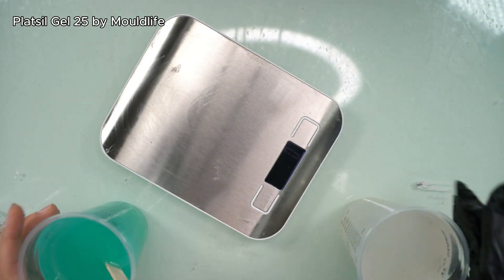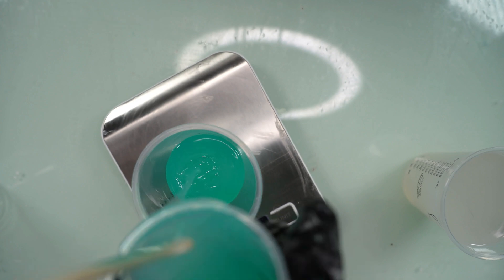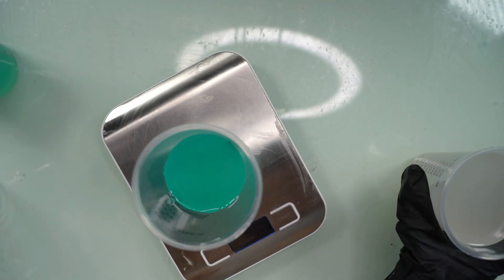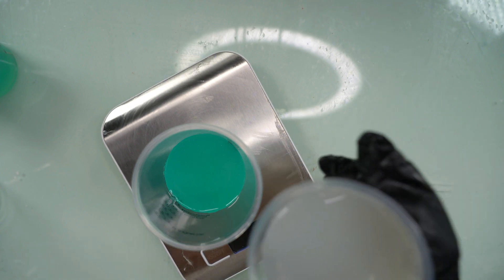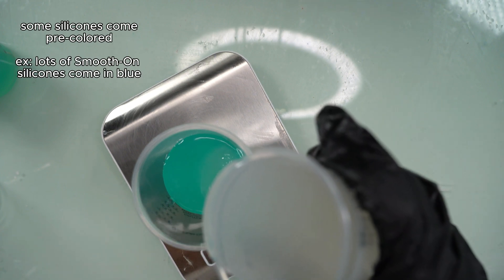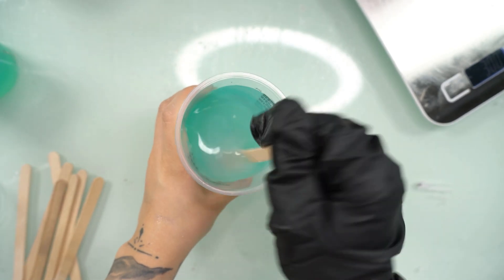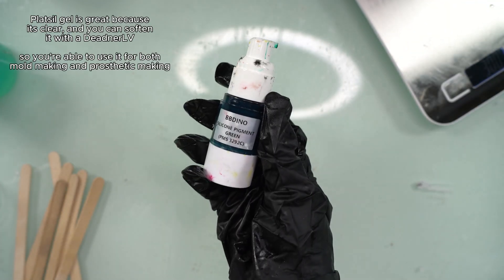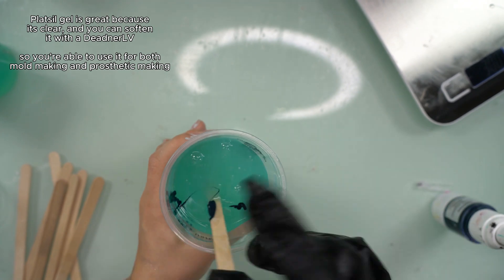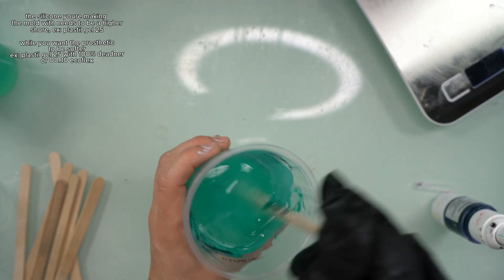Once your mold is completely dry, you can start mixing up your silicone. I'm using Platt Sil Gel 25 and I tinted it green just so the mold had a little bit of color. It makes it a little bit easier to see if you have any hair specs when you're actually spraying the mold, but you can leave it clear if you want to. Some of them come blue already. It just depends on the brand you're using. The ratio is pretty much always one to one no matter what brand you're using.